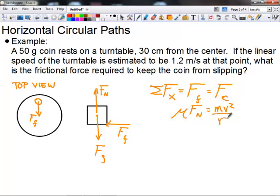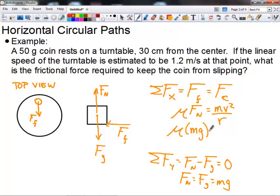So we're trying to find mu. We know m, we know v, we know r. We need to know what Fn is. So if we think back to our summation equations that we did last unit, we know the sum of the forces in the y-direction is going to be Fn minus Fg equals zero. Therefore, we know that Fn equals Fg, which in this case is just going to be mg. So we can plug in and we can say mu mg equals mv squared over r. Our m's do end up canceling out. And so we get mu g equals v squared over r.